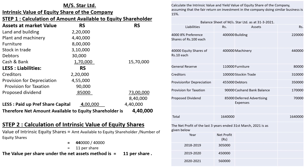Step one is to calculate the amount available to equity shareholders. We take land and building, plant and machinery, furniture, stock in trade, debtors, and cash and bank — the total of all assets comes to 15 lakh 70,000. Then we deduct all external liabilities. Preference dividend, equity share capital, and reserve and surplus are internal liabilities which we do not take; we only consider creditors, provision for depreciation, provision for taxation, and proposed dividend.